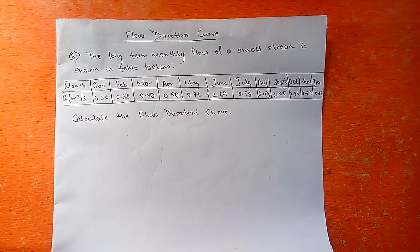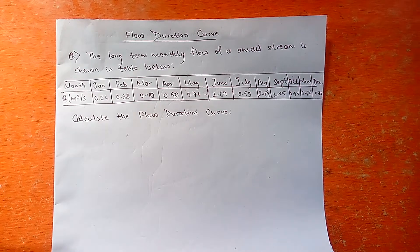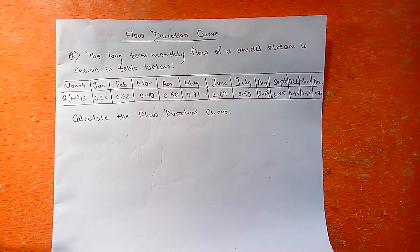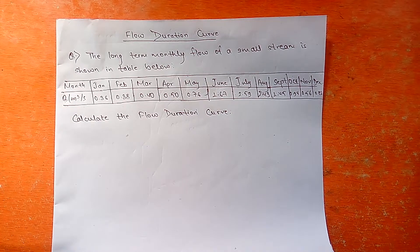Hello and welcome to Civil Talks. Today our tutorial is on the flow duration curve. We are going to study how to calculate and draw the flow duration curve. The question states that the long-term monthly flow of a small stream is shown in the table below, with discharge Q in cubic meters per second for each month from January to December. The question asks us to calculate the flow duration curve.